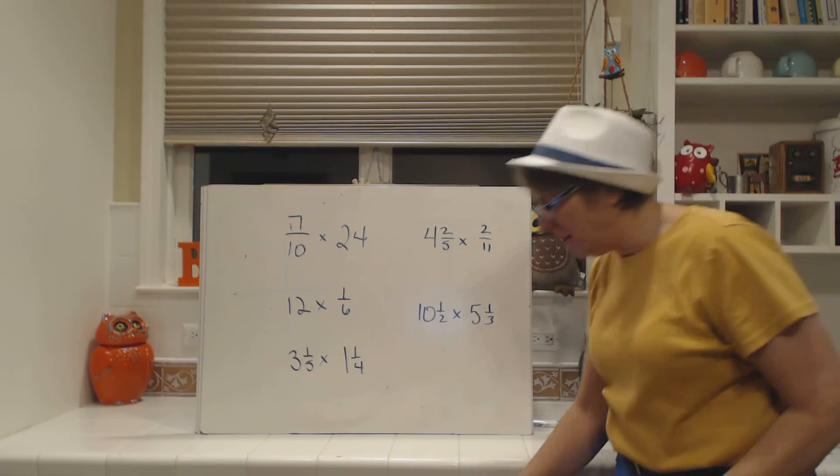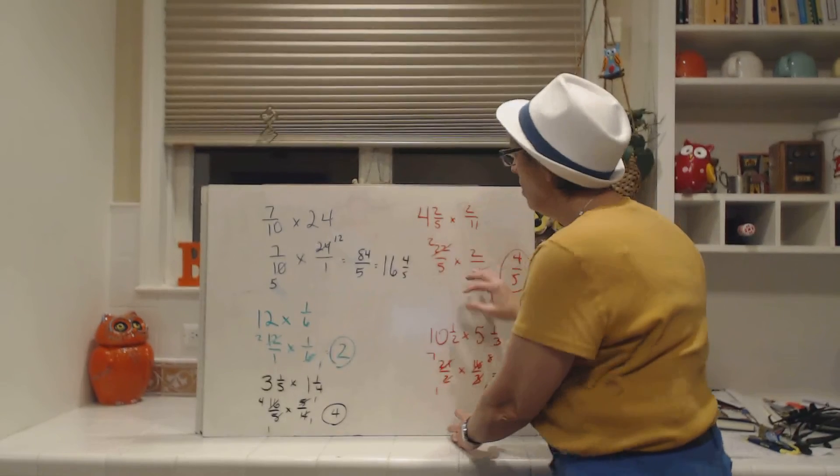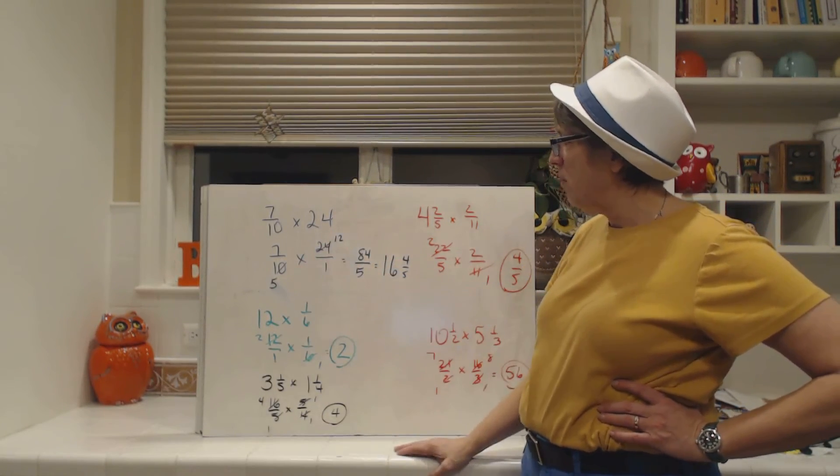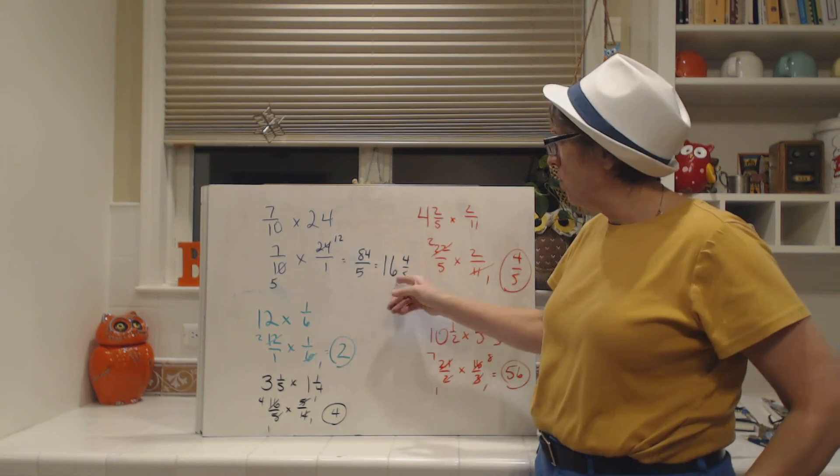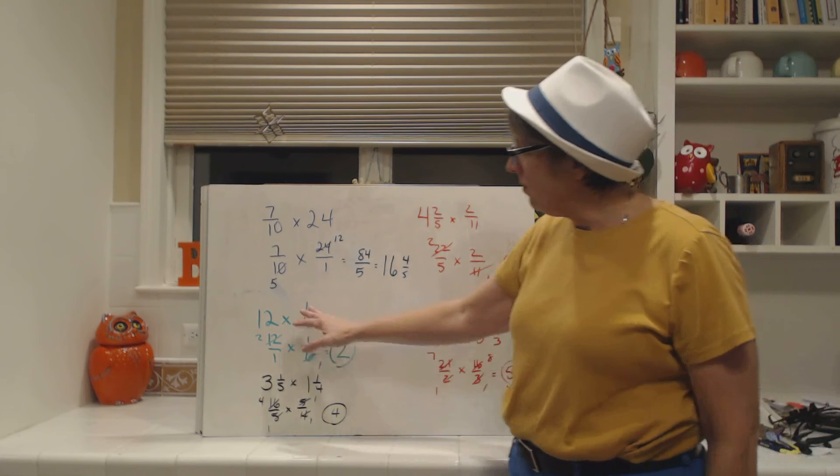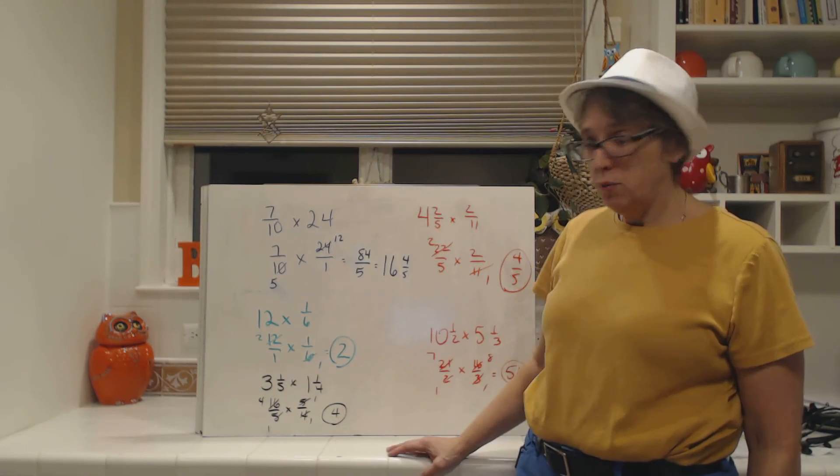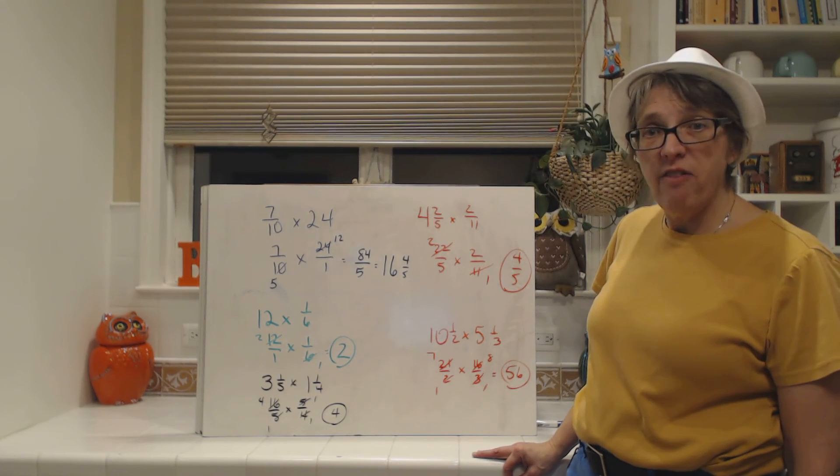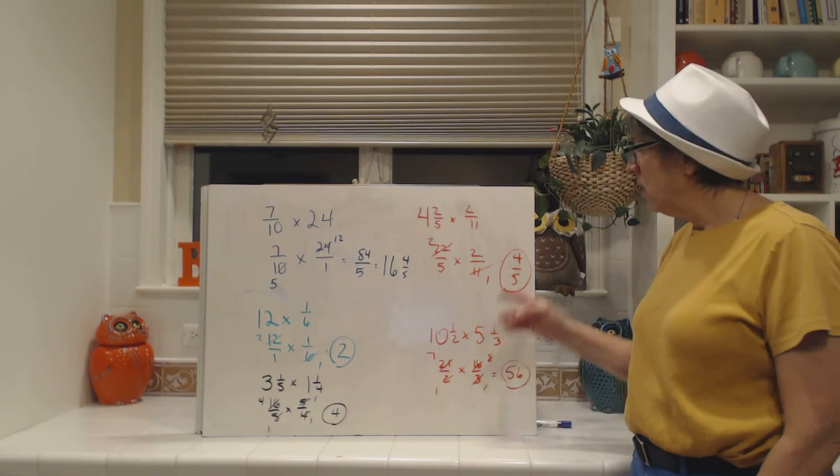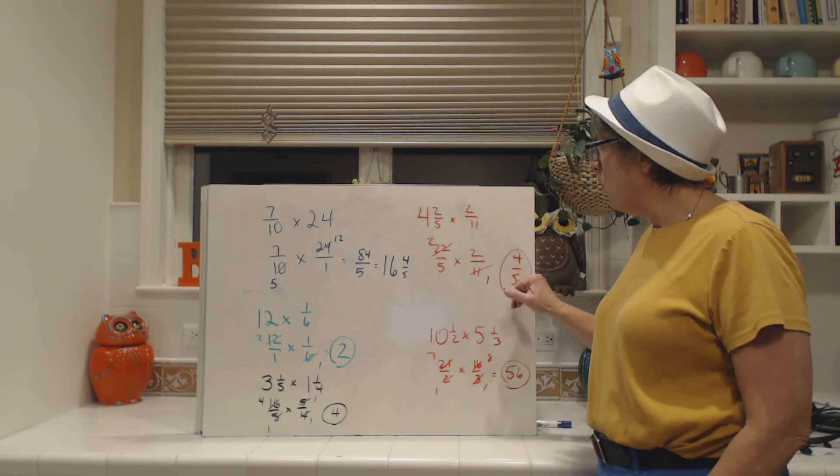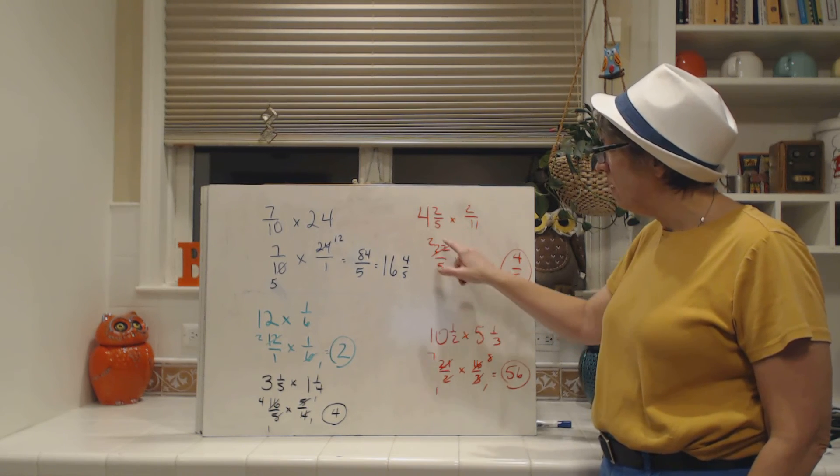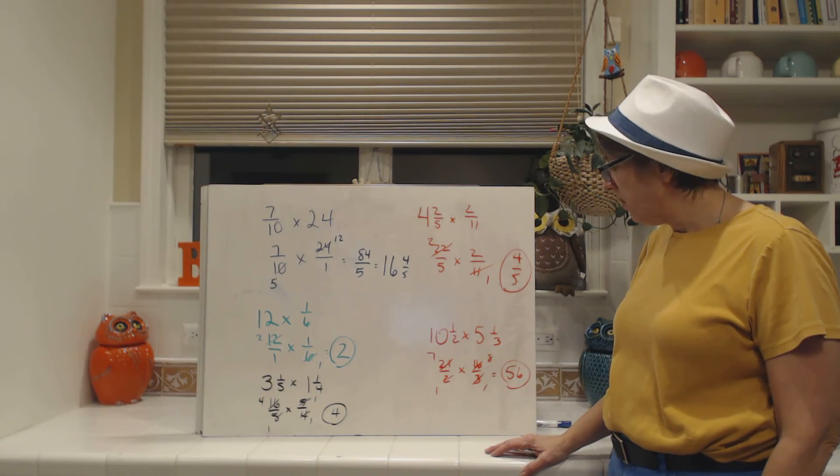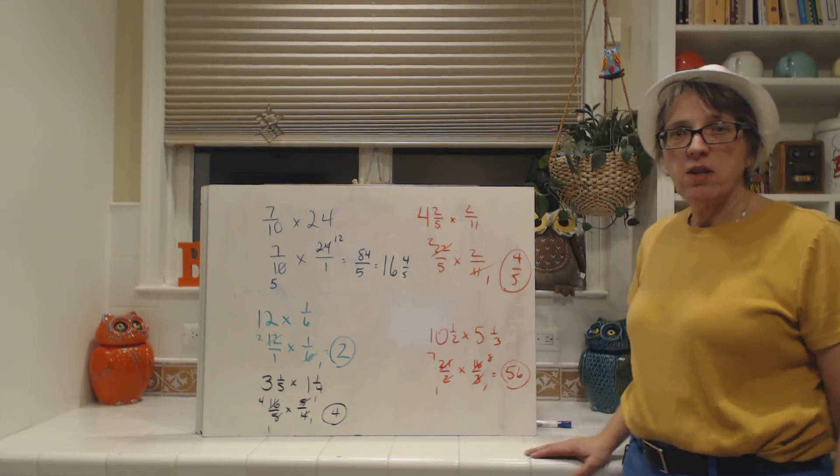Welcome back. So let's see how you did. What I want you to do is, hopefully, when you wrote these down, you canceled. For the first one, 7/10 times 24, you got 16 and 4/5. For 12 times 1/6, hopefully, you got 2. Check that. 3 and 1/5 times 1 and 1/4, check your work. You should have 4. Check your cross-canceling. For 4/5 times 2 and 2/11, 4/5. Because when we change this to 22/5, the 11 goes into 22. And then the last one, 10 and 1/2 times 5 and 1/3, you should have gotten 56. So there it is. You can pause the video and check your answers if you made any mistakes.